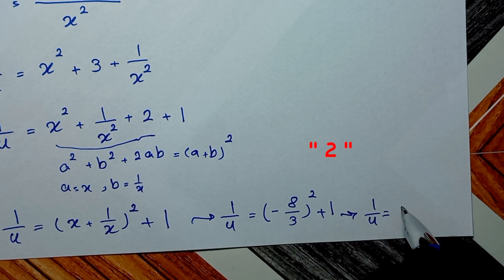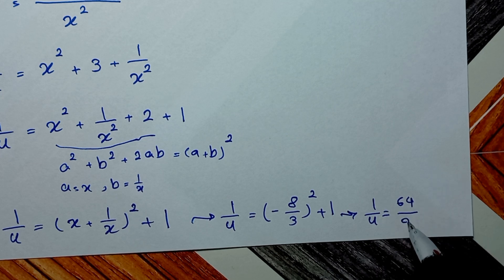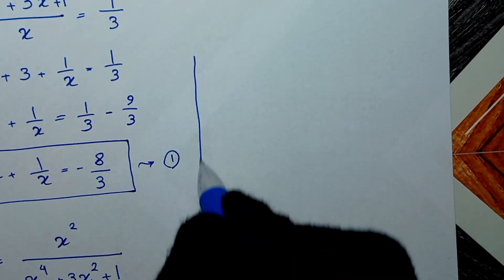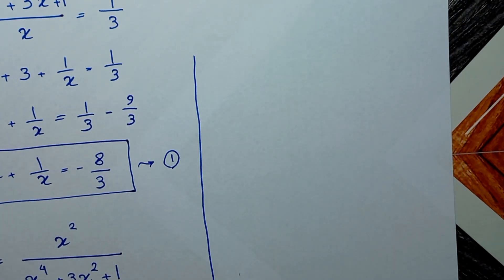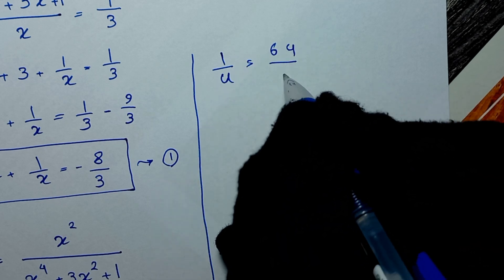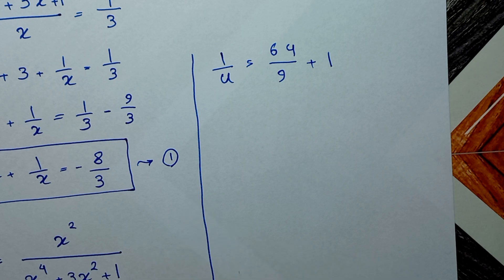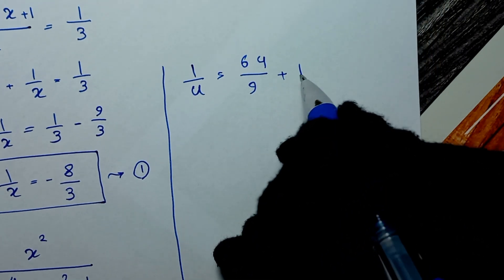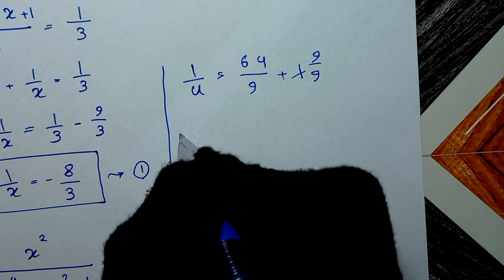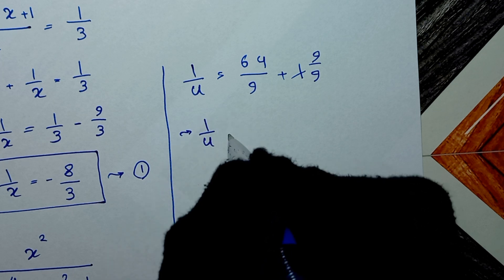Squaring negative 8 over 3 gives 64 over 9. So 1 over u is equal to 64 over 9 plus 1. Writing 1 as 9 over 9, we get 1 over u equal to 64 over 9 plus 9 over 9.